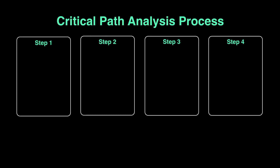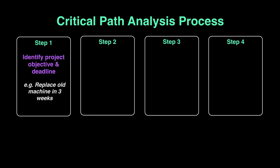Hey guys, how's it going? Hope you're all alright. In this video we're going to learn how to construct a network diagram which is then used to perform our critical path analysis. This process has four steps and the first step is to identify what the company is trying to do — the project at hand and its objective, which will obviously include the deadline. For example, replacing an old machine in three weeks.